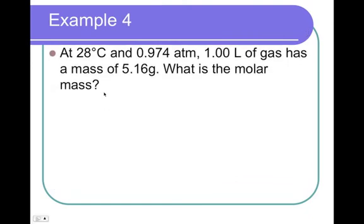Example 4: At 28 degrees Celsius and 0.974 atmospheres, one liter of gas has a mass of 5.16 grams. Mass! That means we're using PVM = mRT. What is the molar mass? And again, after you find the molar mass, I would also like for you to tell me what element are we dealing with.